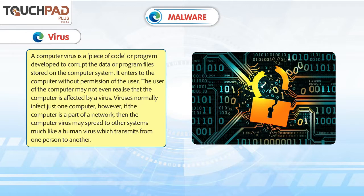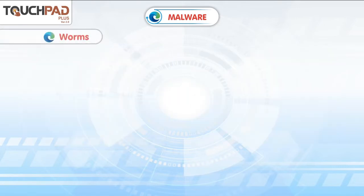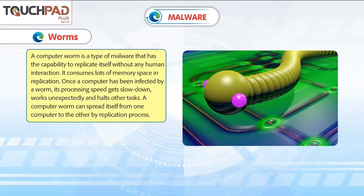However, if the computer is part of a network, then the computer virus may spread to other systems, much like a human virus which transmits from one person to another. A computer worm is a type of malware that has the capability to replicate itself without any human interaction. It consumes lots of memory space in replication. Once infected, its processing speed gets slowed down, works unexpectedly, and halts other tasks. A computer worm can spread itself from one computer to another by the replication process.